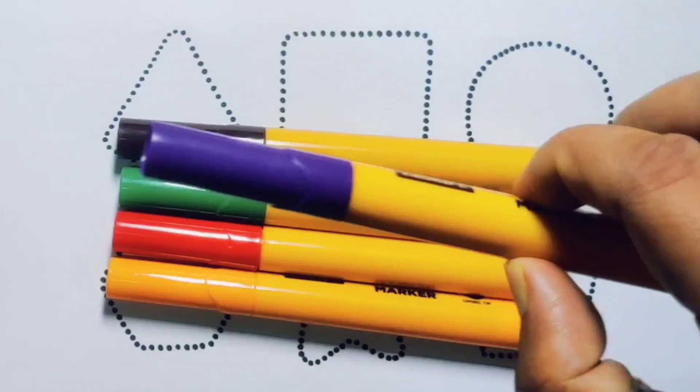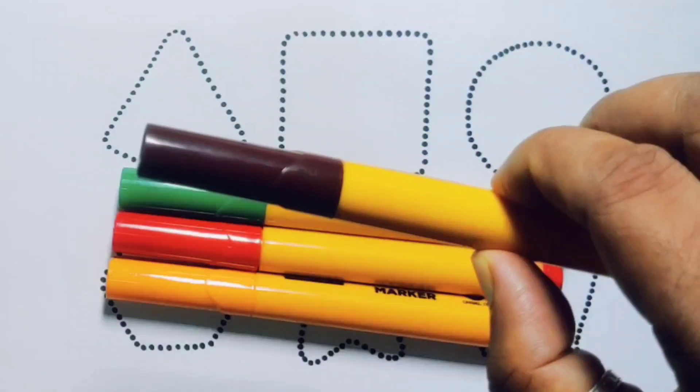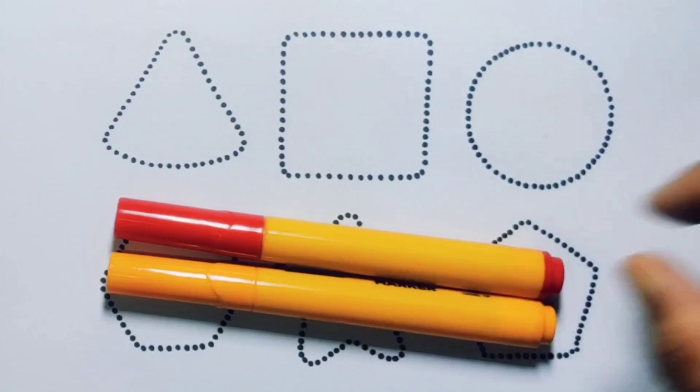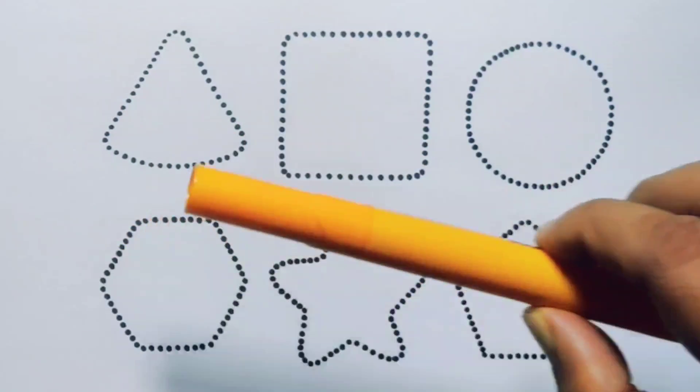Purple color, chocolate color, green color, red color, orange color, and black color. Now let's learn the 2D shapes.